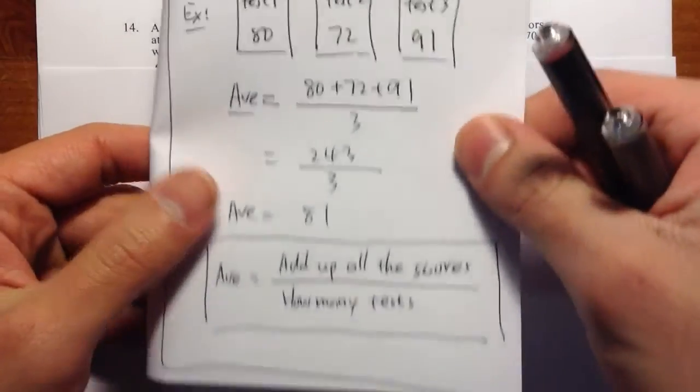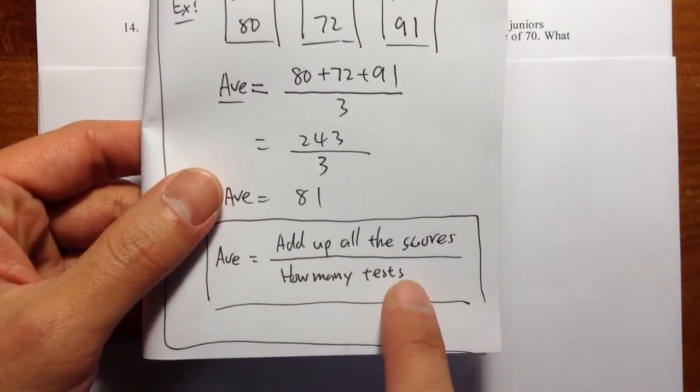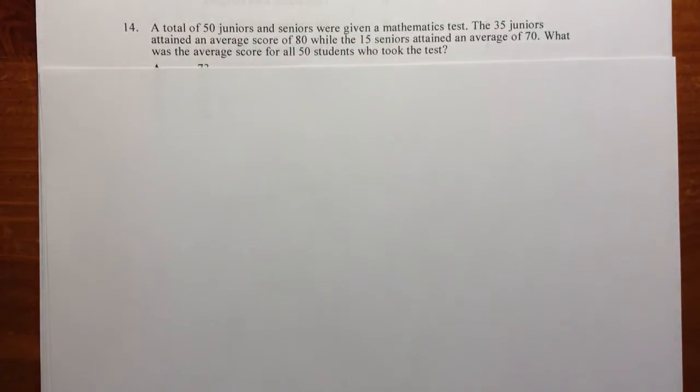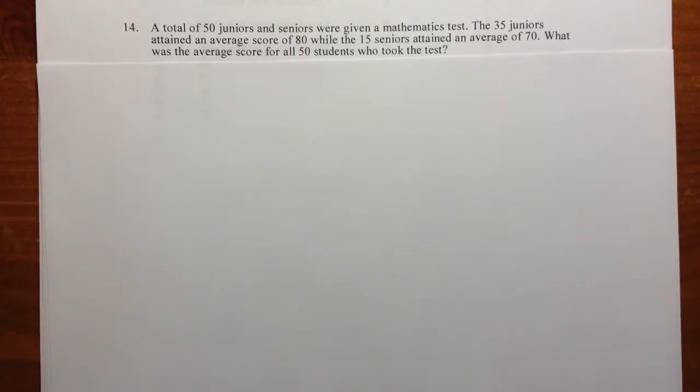To find average, we first need to add up all the scores, and then divide by how many tests that we took. So question number 14 actually asks us average, but again, it asks us average in a slightly different way. So we have to pay attention right here.